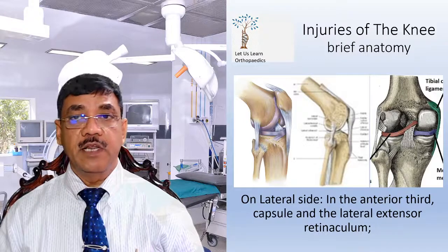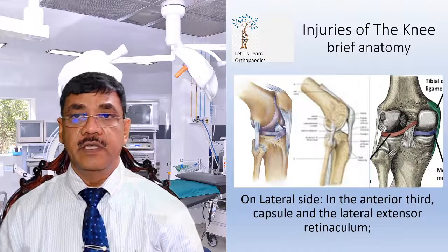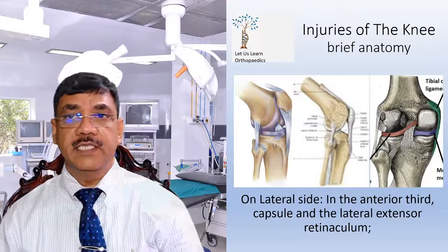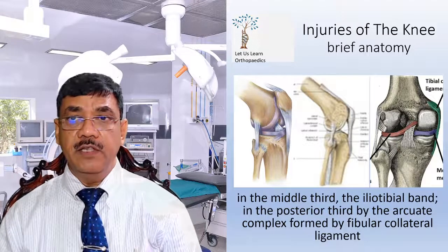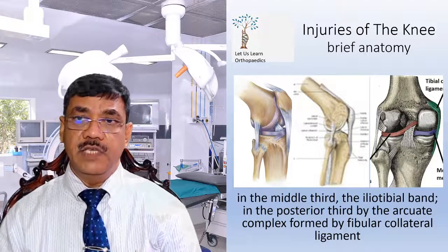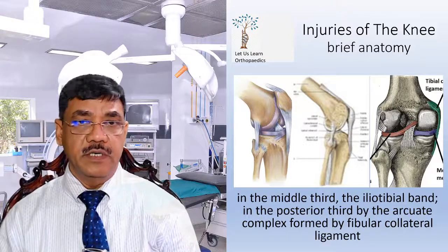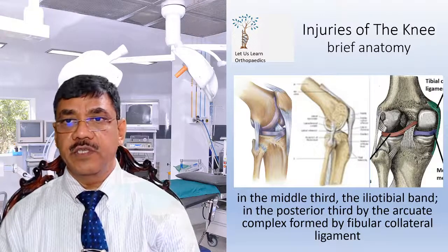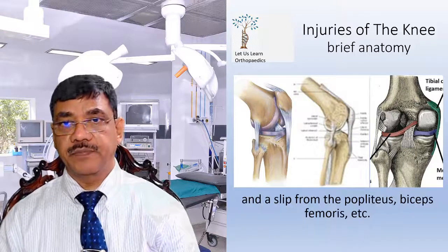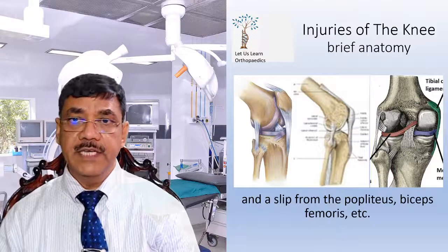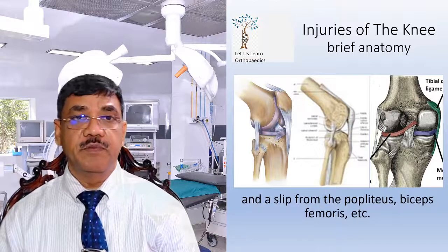Similarly, on the lateral side, in the anterior third, the capsule and the lateral extensor retinaculum provide support. In the middle third, the iliotibial band, and in the posterior third, by the arcuate complex formed by the fibular collateral ligament and a slip from the popliteus, biceps femoris, etc.